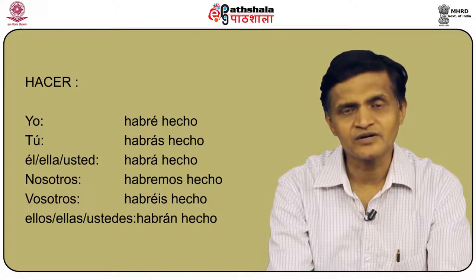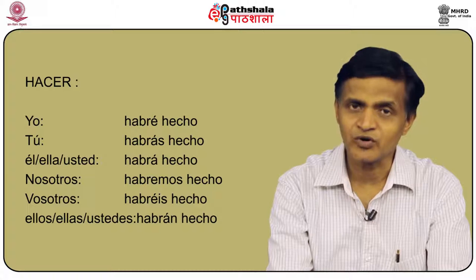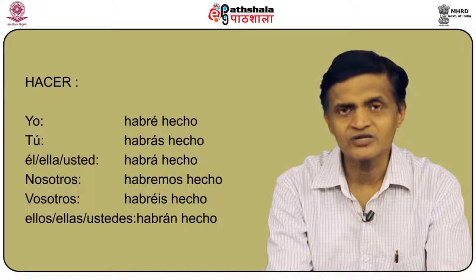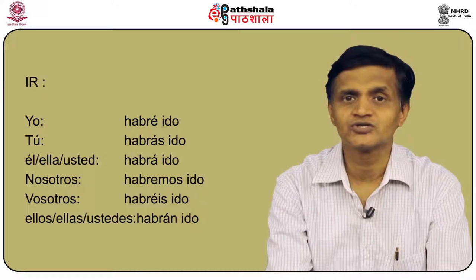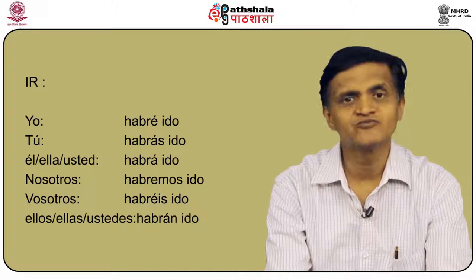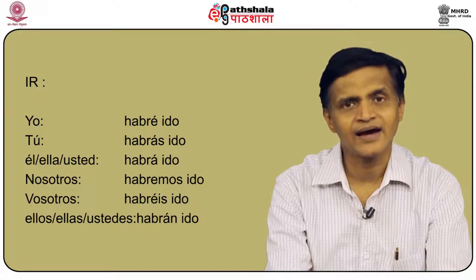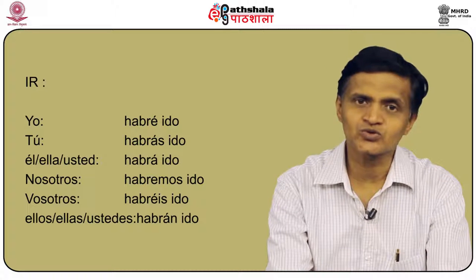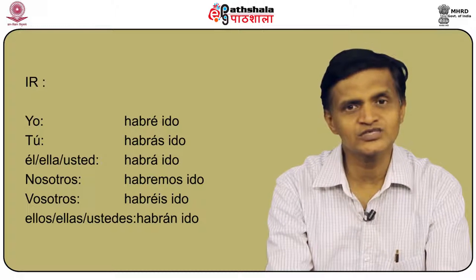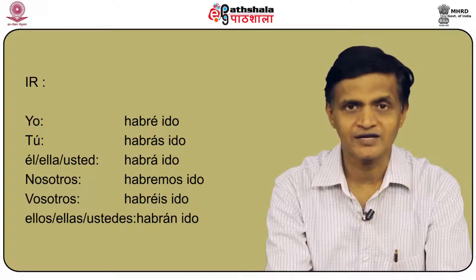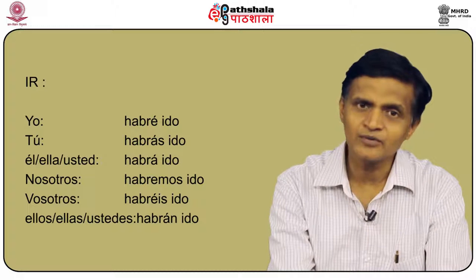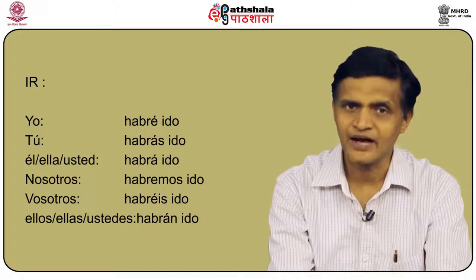Let us pick up ir, meaning to go. Please pay particular attention to this verb. The conjugation of ir is: yo habré ido, tú habrás ido, él/ella/usted habrá ido, nosotros habremos ido, vosotros habréis ido, and ellos/ellas/ustedes habrán ido.